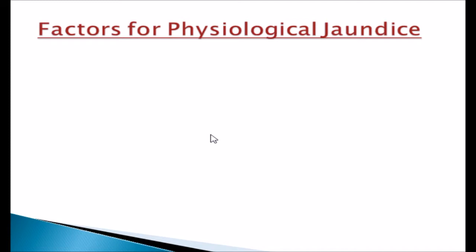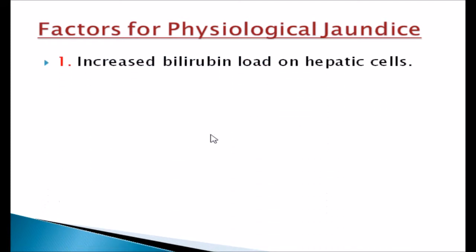Next are the factors for physiological jaundice. The first factor is increased bilirubin load on hepatic cells. When the bilirubin load is increased on the hepatic cells it may cause jaundice. This may be due to increased volume of RBCs in polycythemia, or due to the reduced lifespan of fetal RBCs in the blood.